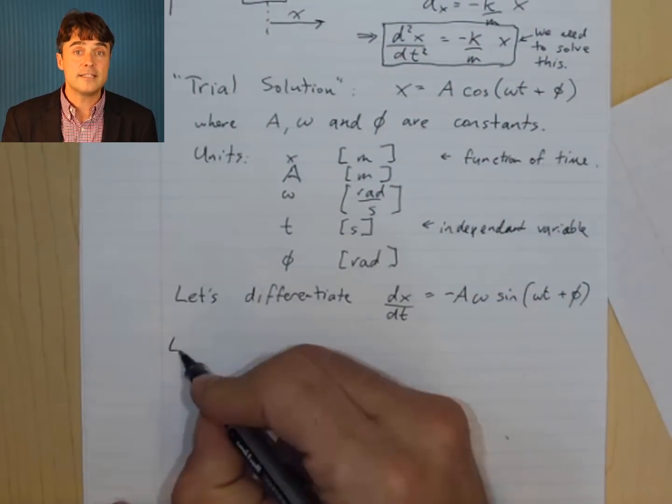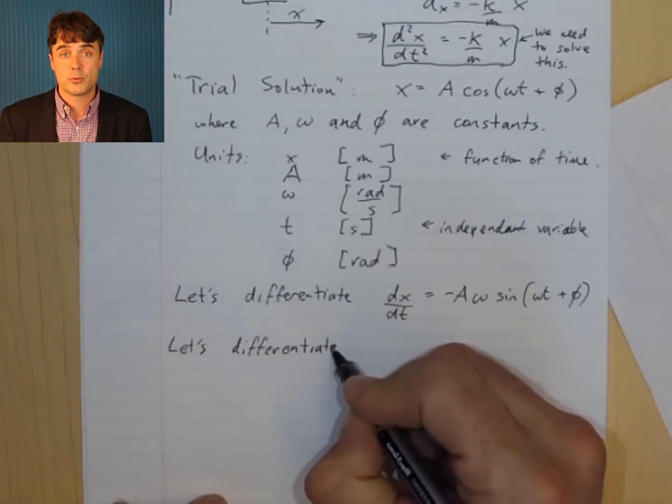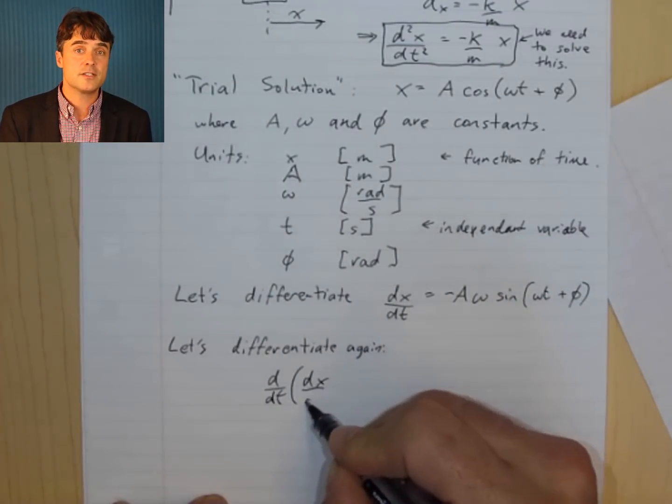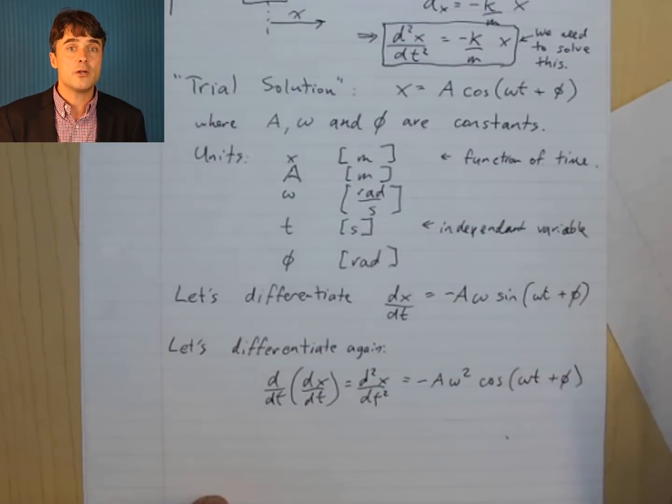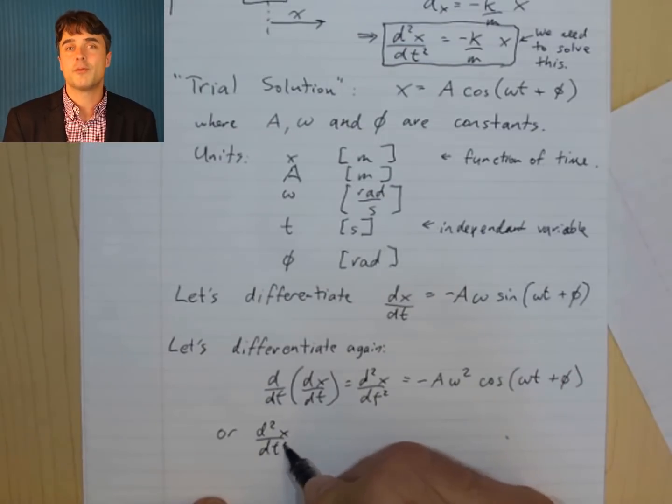Now, let's differentiate again. The derivative of sine is positive cosine, so this is still going to be negative. Another factor of omega comes out. Now, you have d²x by dt² equals negative A times omega squared times the cosine of omega t plus phi.